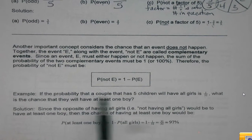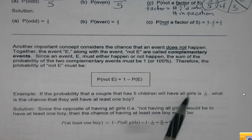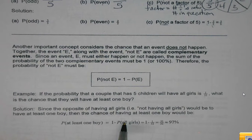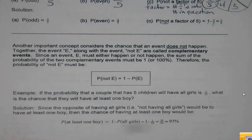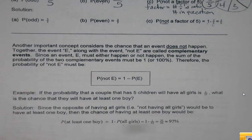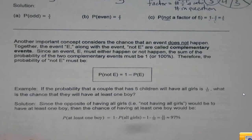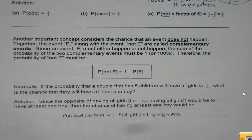And that's described with one more example down here below. The probability that a couple will have five children and will have all girls is one out of 32. What's the chance they will have at least one boy? Now, you probably don't want to sit here and write out every possible combination that could happen when you have five kids. There's 32 different combinations that could happen with that. You know, two boys and three girls. Two girls and three boys.